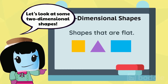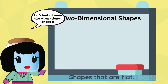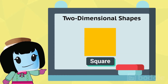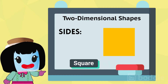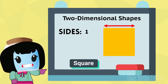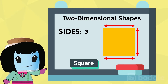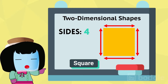Let's look at one that we see a lot of. Do you know how to describe a square? Let's look at how many sides it has. One, two, three, four. It has four sides.